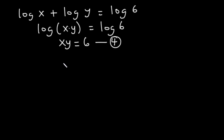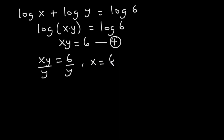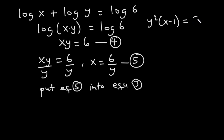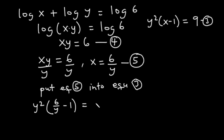Since equation 4 is simpler compared to equation 3, let's make x the subject from equation 4 by dividing through by y, giving x equals 6 divided by y — that's equation 5. Now let's substitute equation 5 into equation 3: y squared times (6 divided by y minus 1) equals 9.